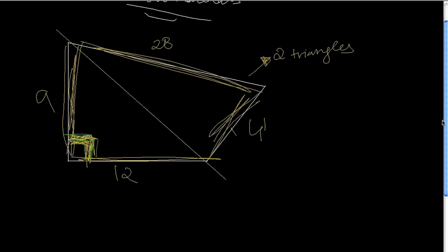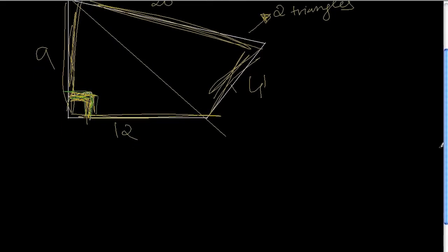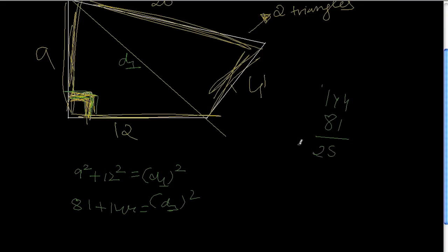So let's do that. This diagonal will have a length of, let's call it d1 for now. So 9 squared plus 12 squared is equal to diagonal 1 squared. So 81 plus 144 is equal to diagonal 1 squared.